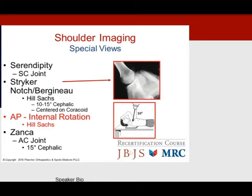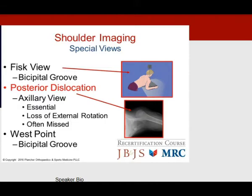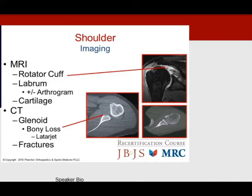Specialty views like the Bernageau or Stryker notch can help detect the Hill-Sachs lesion; an AP internally rotated position makes it evident. For the AC joint, obtain a Zanca view at 10 to 15 degrees cephalad. Posterior dislocation in the emergency room is often missed — an axillary view or loss of external rotation will help. Advanced imaging: MRI for rotator cuff deficiencies and labral/cartilage pathology; CT scan for bony lesions and fracture assessment.